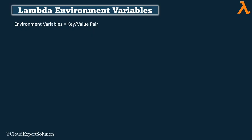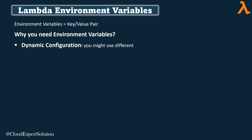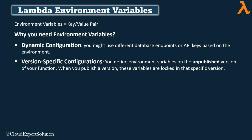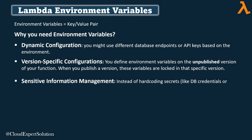In this section we are going to talk about Lambda environment variables — key-value pairs. Why do you need environment variables? For dynamic configuration: you might want different database endpoints or API keys based on your environment. Instead of hard-coding those parameters inside your Lambda function or using multiple Lambda functions, you can use environment variables. Another use case is version-specific configuration: you can define environment variables on the unpublished version, and when you publish a version, these variables are locked in that specific version. A third use case is sensitive information management — instead of hard-coding secrets like database credentials or API keys, store them as environment variables and optionally encrypt them using AWS CMK or your own custom CMK.